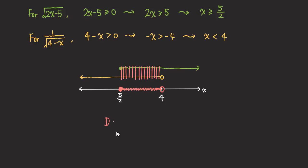Based on our graph, we can now write down the domain. The solid dot at 5/2 means we include it, so we use a bracket. The open circle at 4 means we do not include it, so we use a parenthesis. Therefore, the domain for the function is [5/2, 4). That's it for this problem. If you like this video, please subscribe to my channel and share my videos with others. Thank you for watching — I'll see you next time.